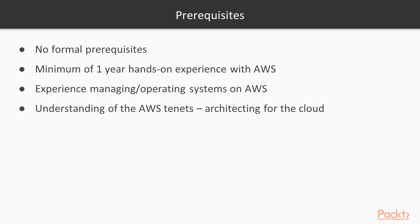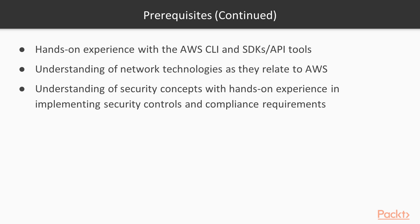You would have also had experience of managing and operating systems on AWS. You have an understanding of AWS tenants and concepts related to architecting for the cloud. You have hands-on experience with using the AWS CLI, SDKs, and API tools — we do cover an introduction to the CLI service in this course. You have an understanding of networking technologies as they relate to AWS, and of security concepts with hands-on experience in implementing security controls and compliance requirements.